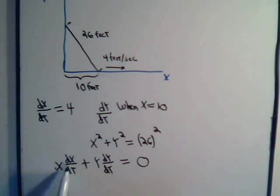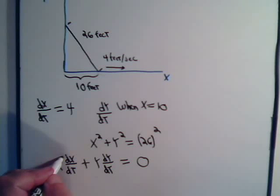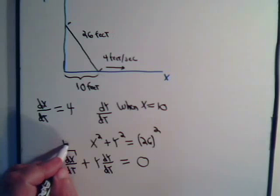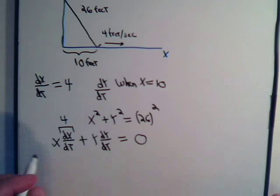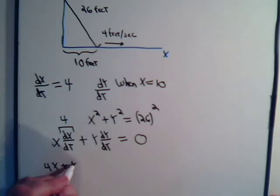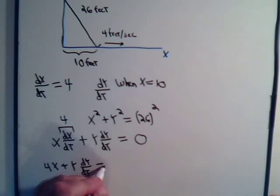So we have x times dx/dt. We know what that is. That's 4. So we have 4x, plus y times dy/dt, equals 0.